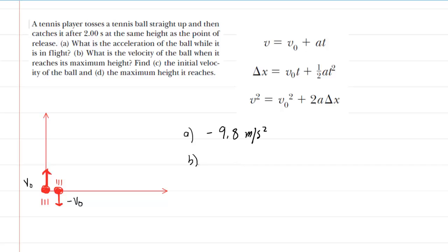In part B, it asks for the velocity of the ball when it reaches the maximum height. Now, in my little picture here, the maximum height of the tennis ball would be somewhere up here. And at that moment, at that maximum height, that velocity up there would be 0 meters per second for just a split moment. And so that would be the correct answer for part B.